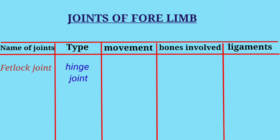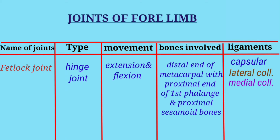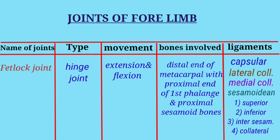Fourth is the fetlock joint. The type of joint is hinge joint and movement is extension and flexion. Bones involved are the distal end of the metacarpal with the proximal end of the first phalanx and the proximal sesamoid bones. Ligaments are the capsular ligament, lateral collateral ligament, medial collateral ligament, and sesamoidean ligaments: first superior, second inferior, third intersesamoid, and fourth collateral.